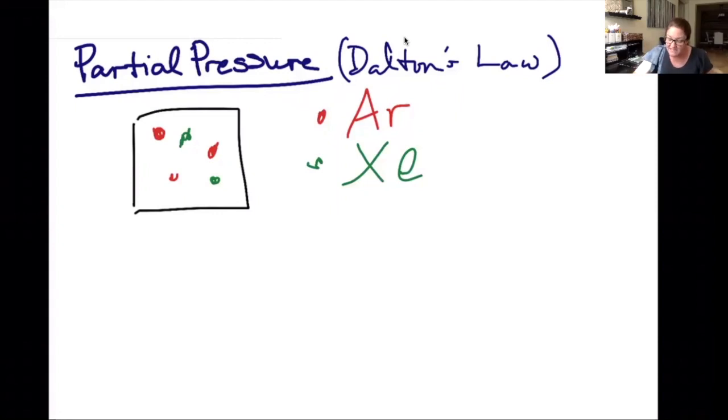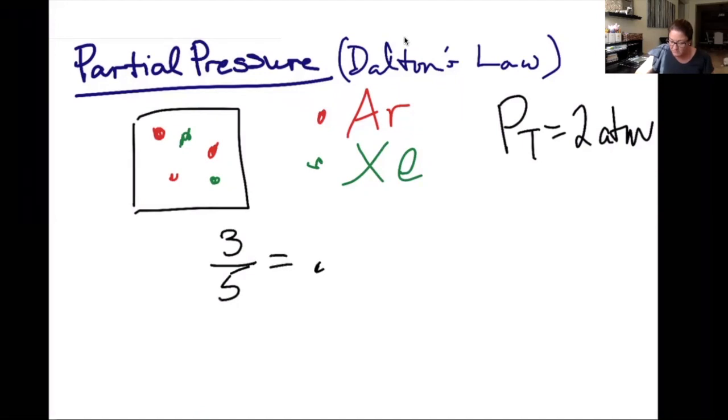If I said that the pressure in this container as total is going to be about 2 atm, what fraction of the molecules are argon? That is, what fraction of the pressure is due to argon molecules? So I take a look here and I say that I have three argon molecules out of a total of five molecules, which equals 0.6.